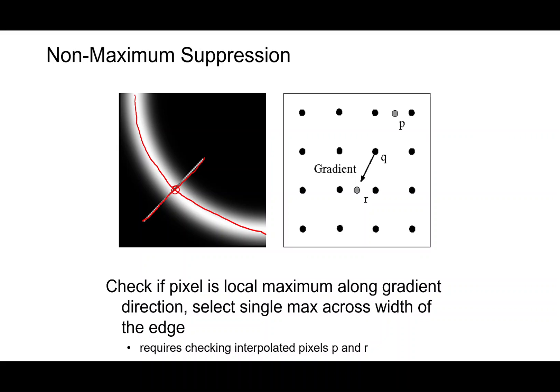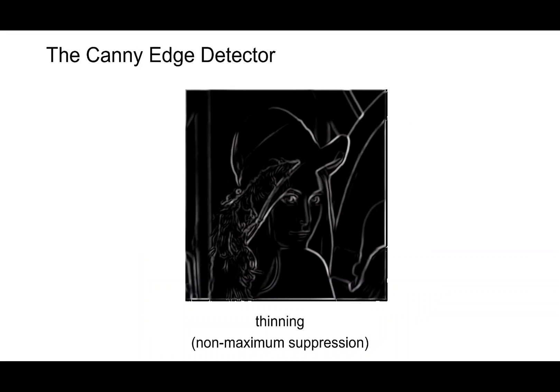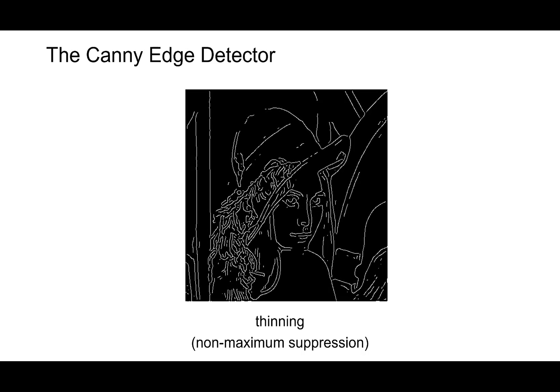When you want to find the maximum point, sometimes you may have to interpolate pixels. So when you do the non-maximal suppression, you will get a single pixel thick edges.